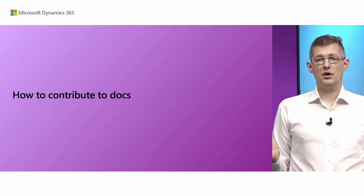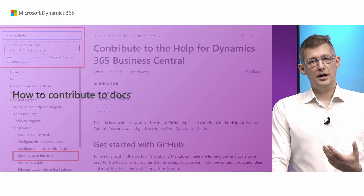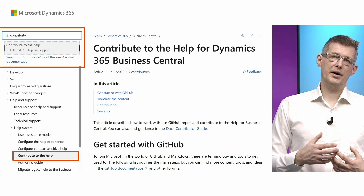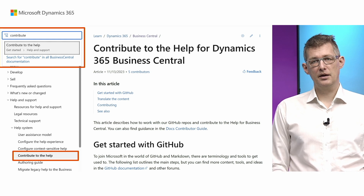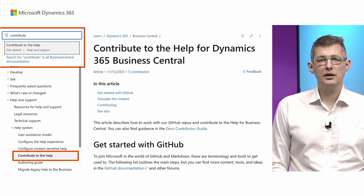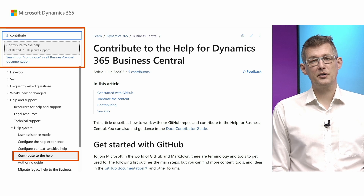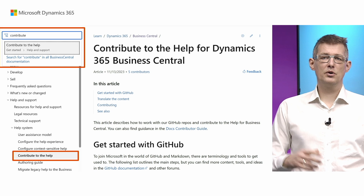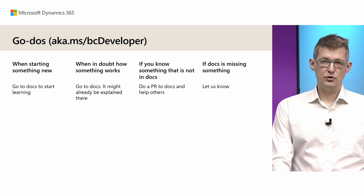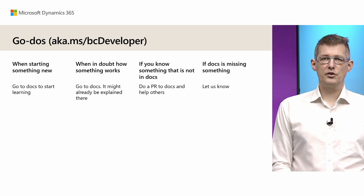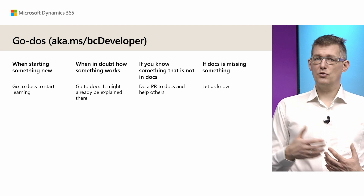Finally, all these changes would not be there if you didn't tell us about them. You might have expertise about a particular area where docs could be better — why not do a pull request? The best way to get started is to search in docs for 'contribute,' which helps you find the 'Contribute to the help' article. This takes you through how to work with GitHub, how to do a pull request, and contribute to the documentation. So the dos for you as a developer: learn the new aka link, aka.ms/bc-developer, and if you start something new, go to docs to start your learning.